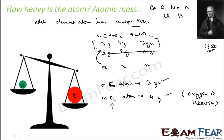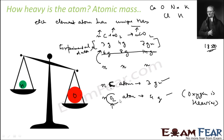3g of carbon and 4g of oxygen gives 7g of carbon dioxide — this is experimental data. From this, we conclude that N atoms of carbon react with N atoms of oxygen to form N molecules of carbon dioxide. So N atoms of carbon = 3g and N atoms of oxygen = 4g, meaning oxygen atoms are heavier than carbon.